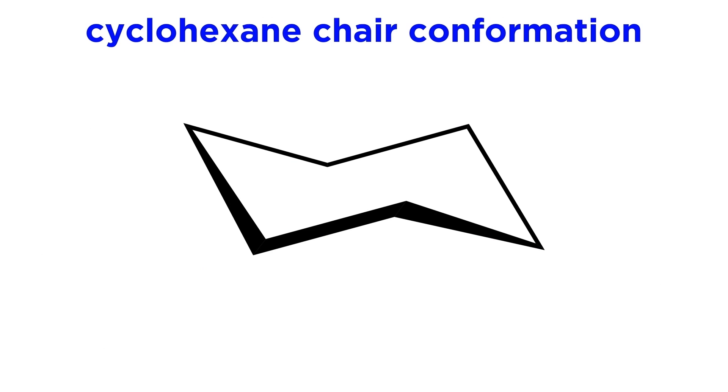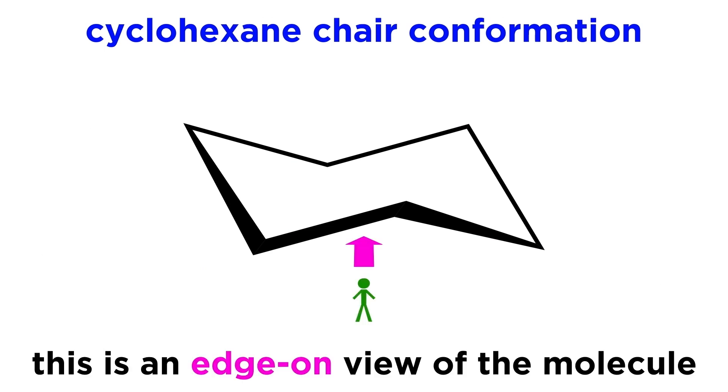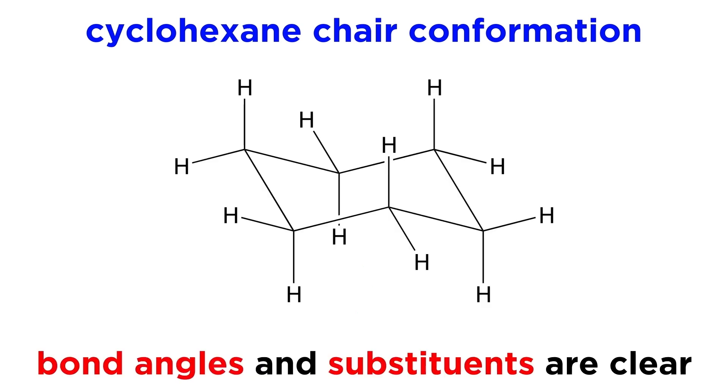This is shown here, and it is important to note that this is an edge-on view of the molecule, as opposed to the top-down view we are used to. This is helpful because we can more clearly see all of the bond angles and the positions of the substituents on every carbon.